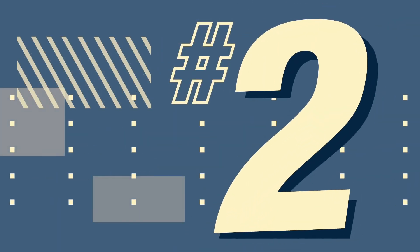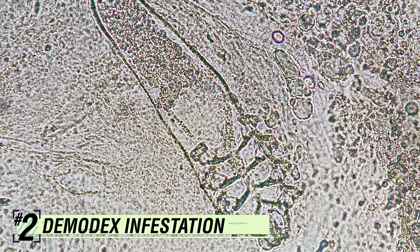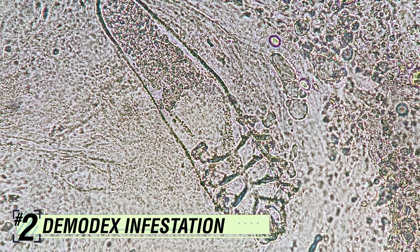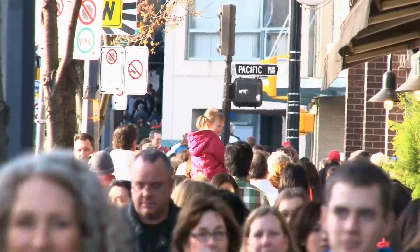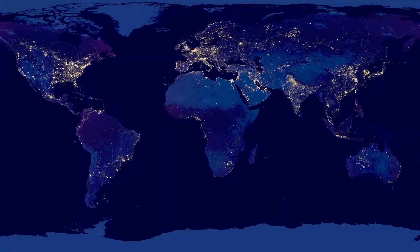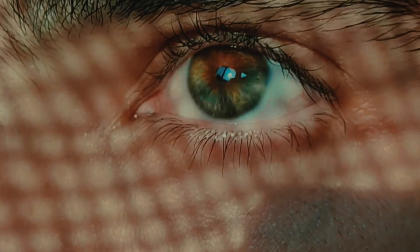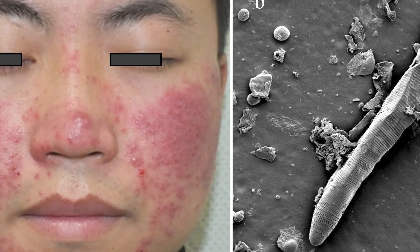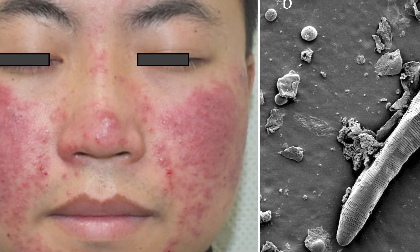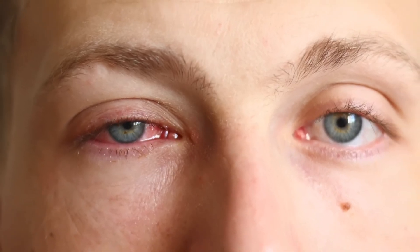Number two: Demodex folliculorum infestation. Demodex folliculorum are mites that are found in hair follicles of humans around the world, including the hair follicles of your eyelashes. Occasionally, these mites can cause a condition called Demodecosis. Demodecosis can cause irritation around the eyelashes and lead to the loss of eyelashes, conjunctivitis, and decreased vision.